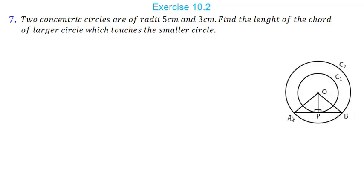We can find the value of AP. AB is a tangent to the smaller circle and a chord of the larger circle, so angle OPA is 90 degrees. Knowing OP and OA, we can use the Pythagoras theorem to find AP. From a theorem in class 9, a perpendicular from the center to a chord bisects the chord, so AB equals twice AP.